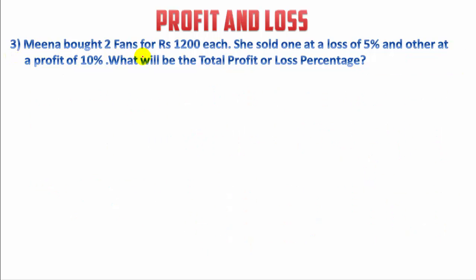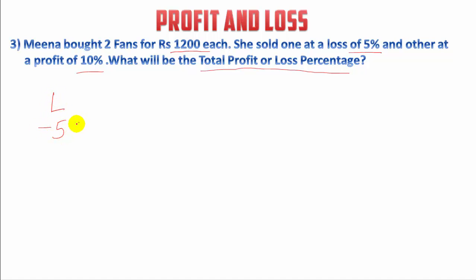Third question: Meena bought 2 fans at Rs.1200 each. She sold one at a loss of 5% and the other at a profit of 10%. We have to find the total profit or loss percentage. There are two methods to solve this, but in exams where time is limited, we use the allegation method. On selling one fan there is a loss of 5% (written as −5%), and on the other there is a profit of 10%.